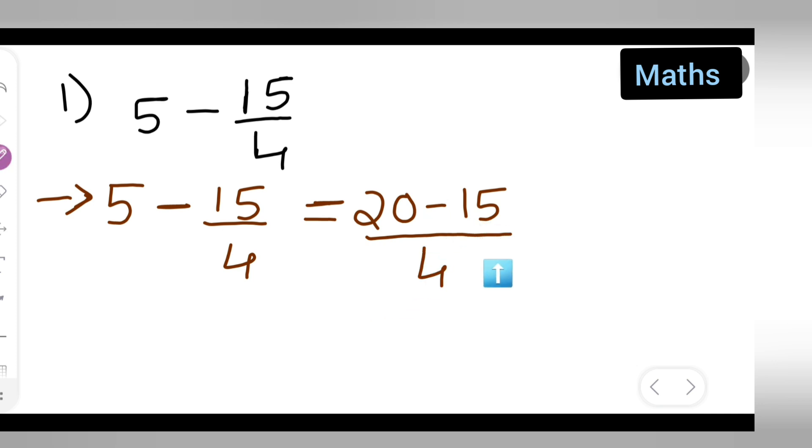So 20 minus 15 is 5 and the denominator is 4. What I will do here is cross multiply. We have cross multiplied here. This 4 we have multiplied it by 5.